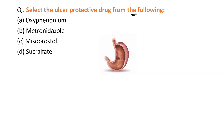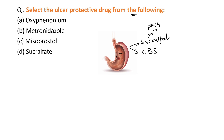There are mainly two types of ulcer protecting drugs: first is sucralfate and second is colloidal bismuth salt. The special point about sucralfate is that it polymerizes at a pH less than 4 — if GIT pH is less than 4, sucralfate polymerizes and shows its action. The special point about colloidal bismuth salt is that it causes bone and brain toxicity.